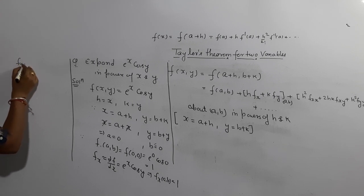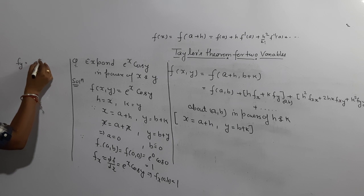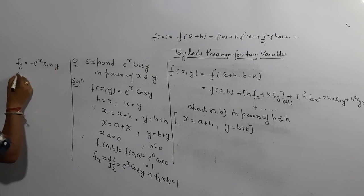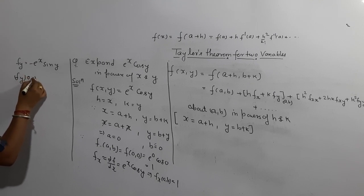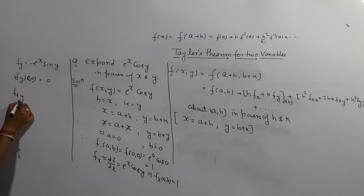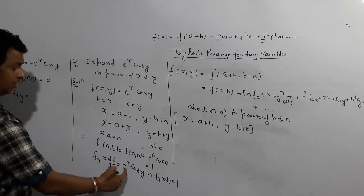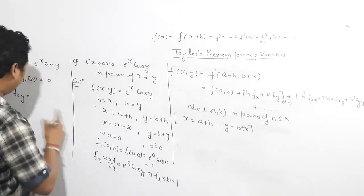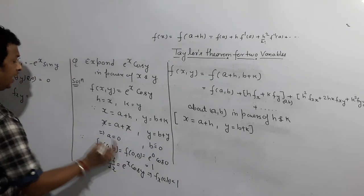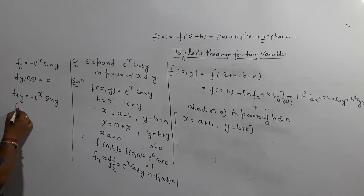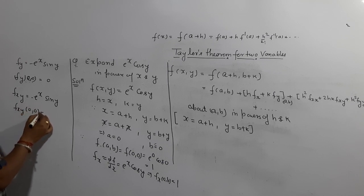What is fy? Differentiate with respect to y: e^x cos y differentiated gives e^x · (−sin y). So fy at (0,0): since sin 0 = 0, fy at (0,0) = 0. What is fxy? fxy means differentiation of fx with respect to y. We have fx = e^x cos y, differentiate again with respect to y, we get e^x · (−sin y). So fxy at (0,0) = 0.